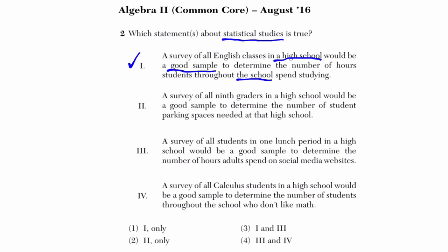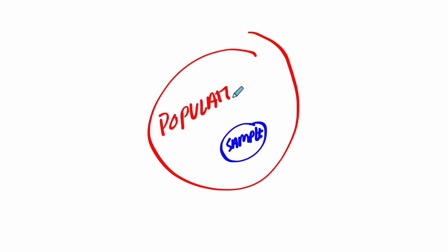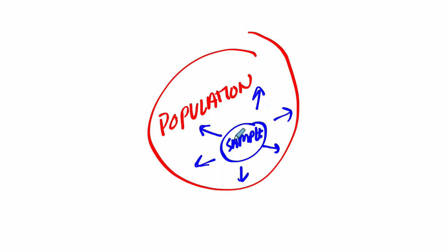You can't test everyone, right? You can only take a small sample. The question is: if this is our sample and this is representative of our population, what things can we do to make sure the sample represents the population in the best way possible? One way is to make sure your sample is fairly large. All English classes will be a lot of students relative to the whole high school, and the sample is somewhat random — you're not picking a select group that has a certain bias. That's a pretty good choice.